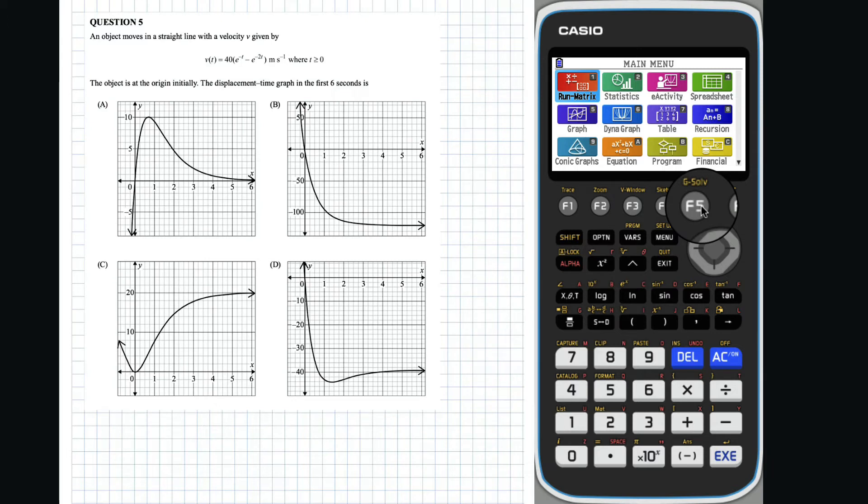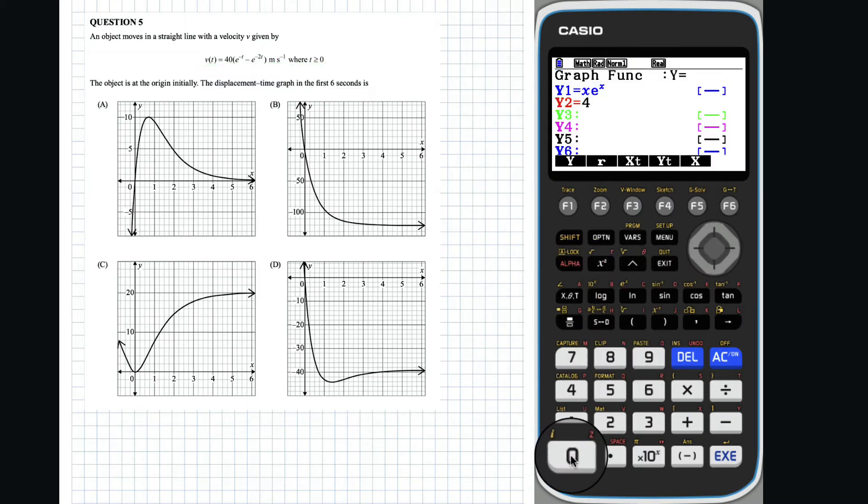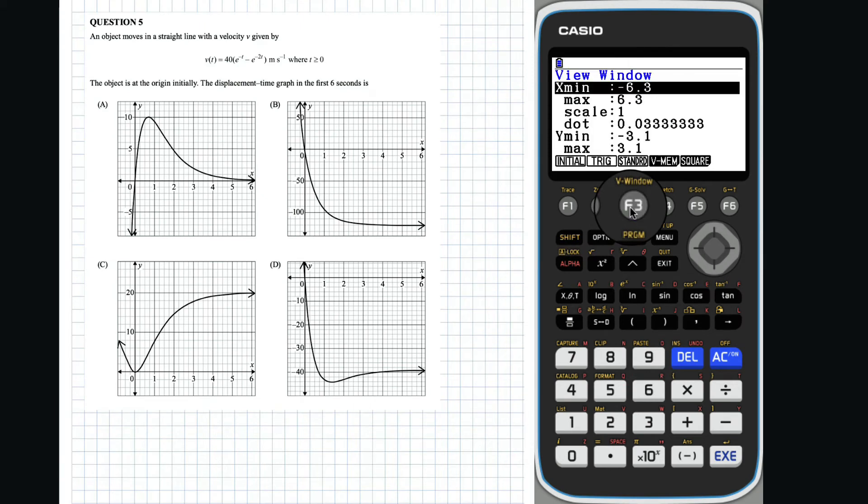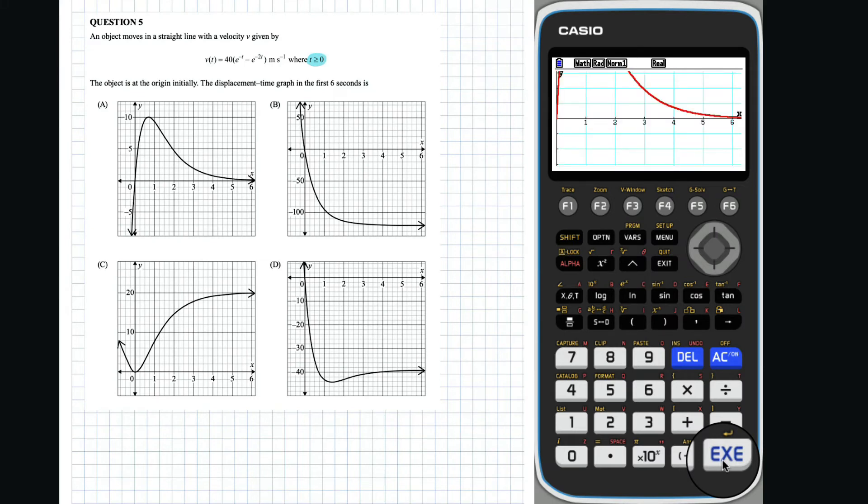Question 5: If you do not know what the graph of the velocity function looks like, we can graph it. We will start with the initial view window but with x-min equal to 0 as t must be greater than or equal to 0. If we zoom out, which can easily be done by pressing the subtraction button, we get a good view of the graph.